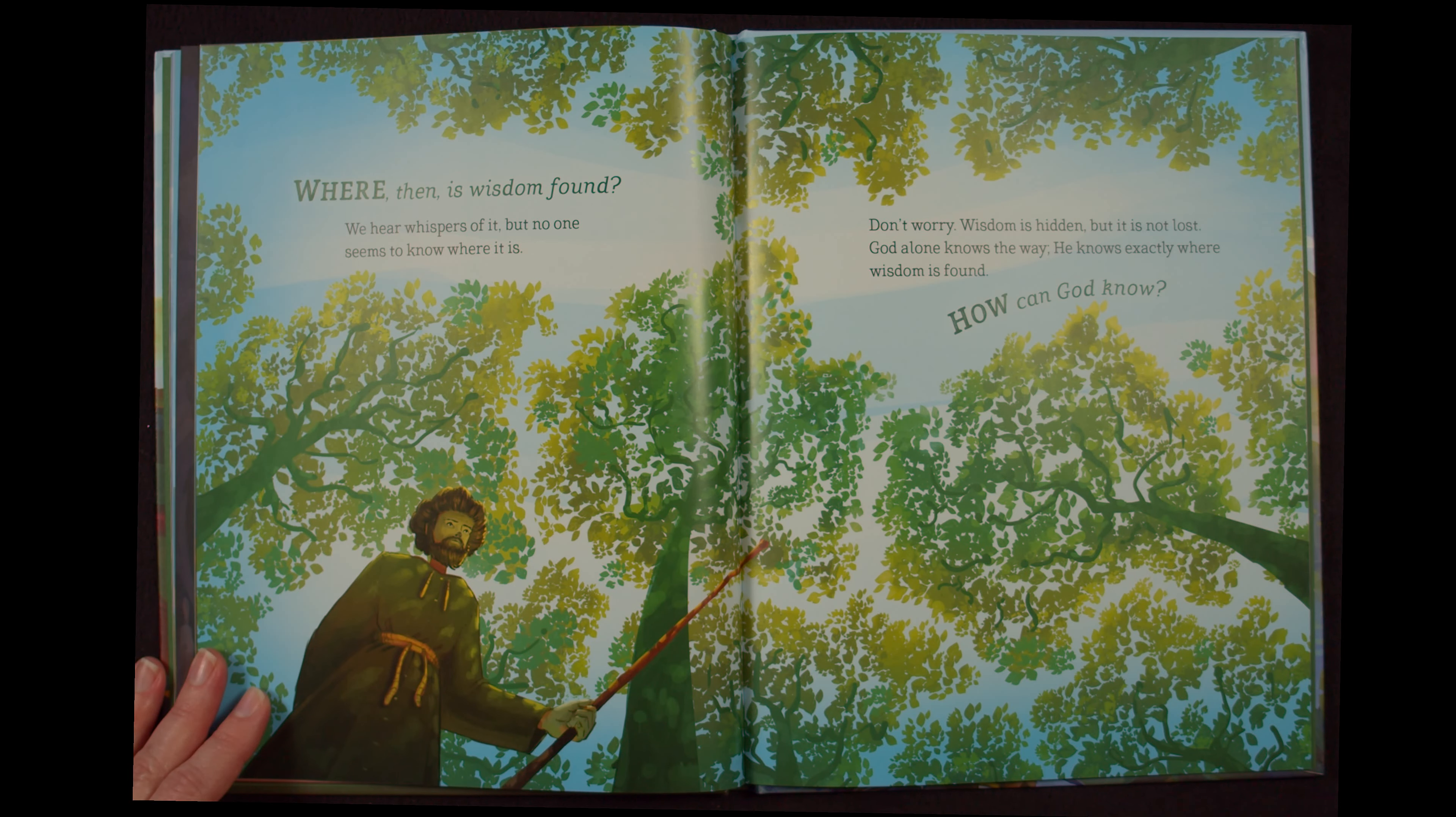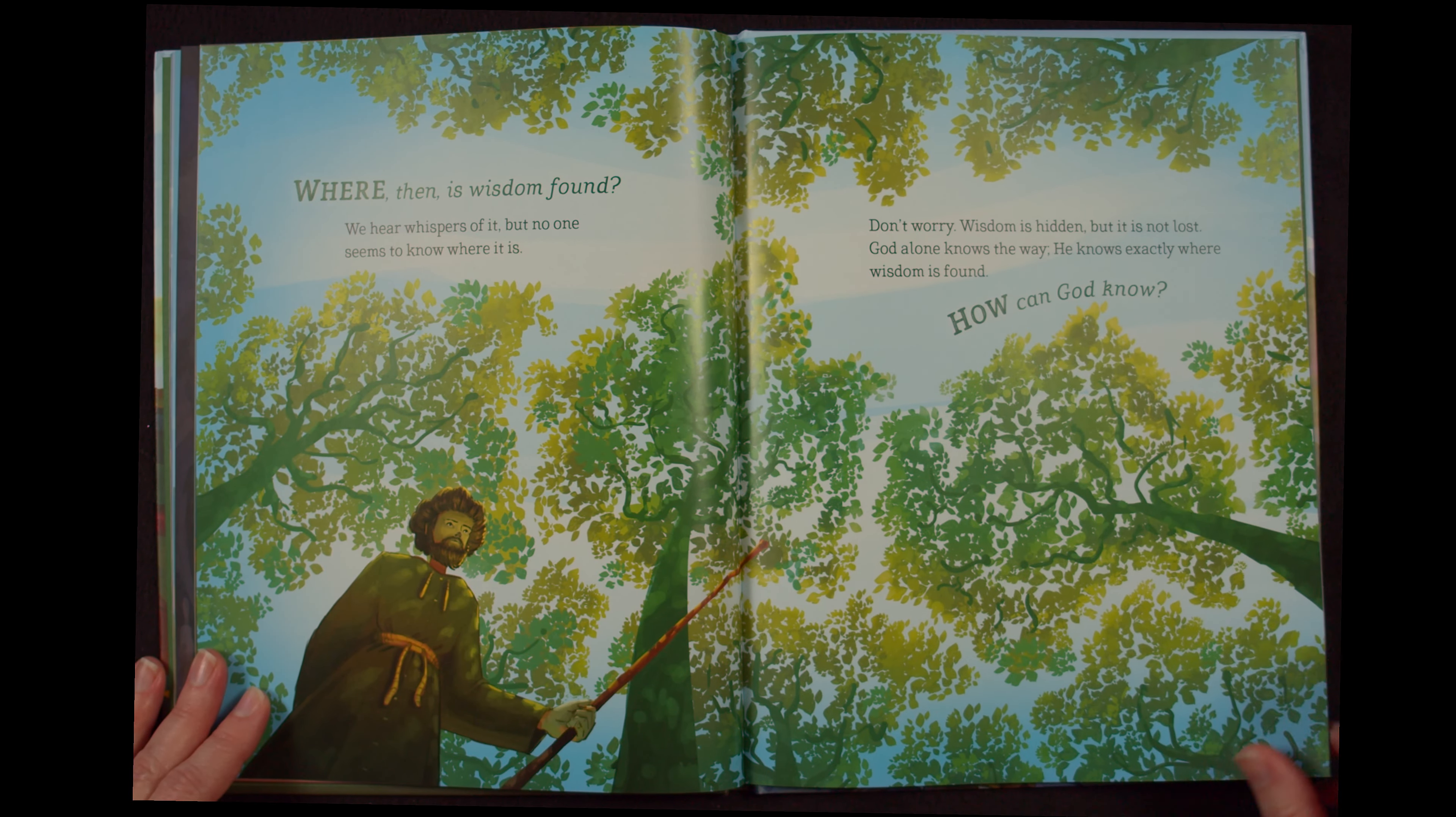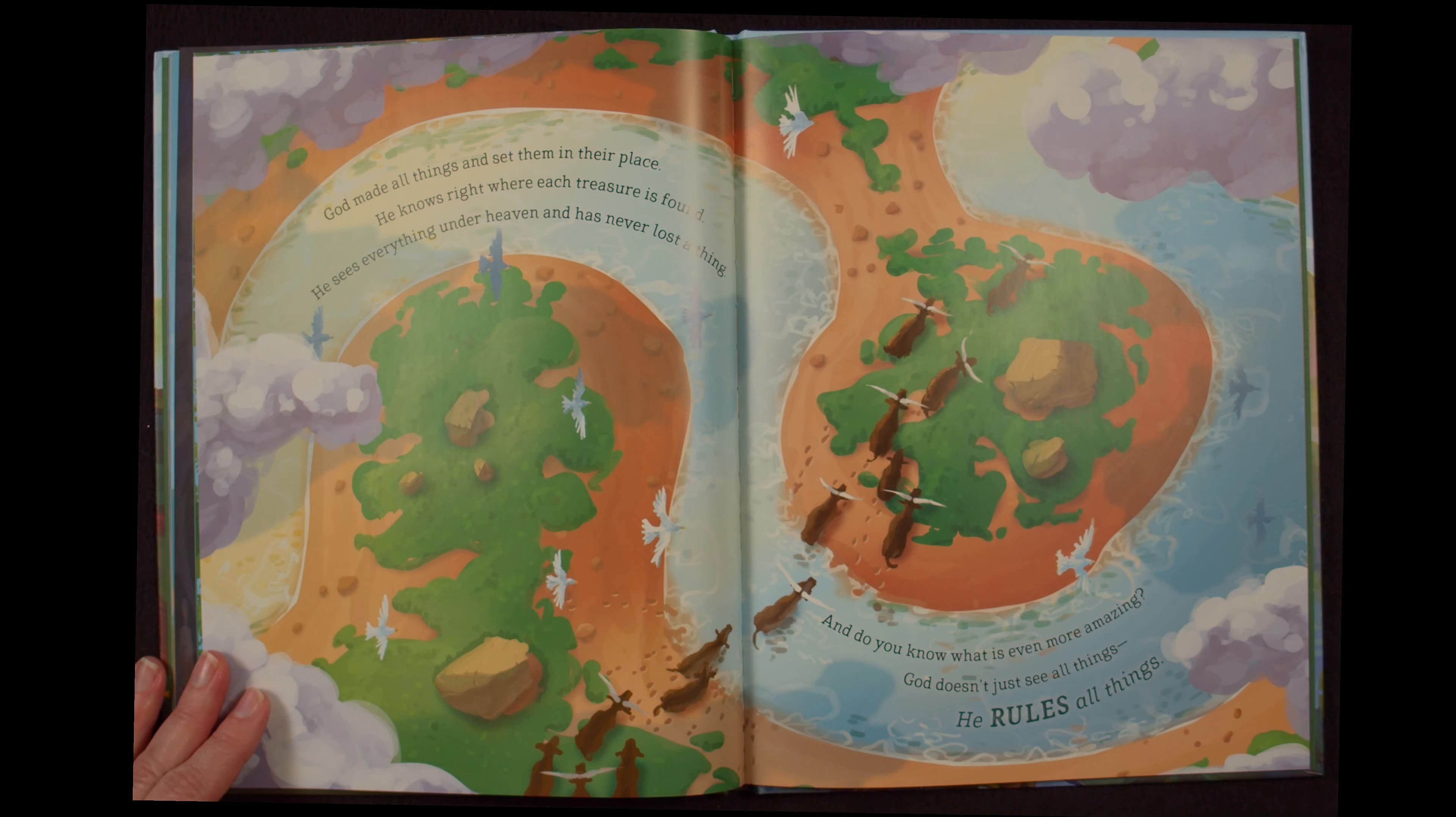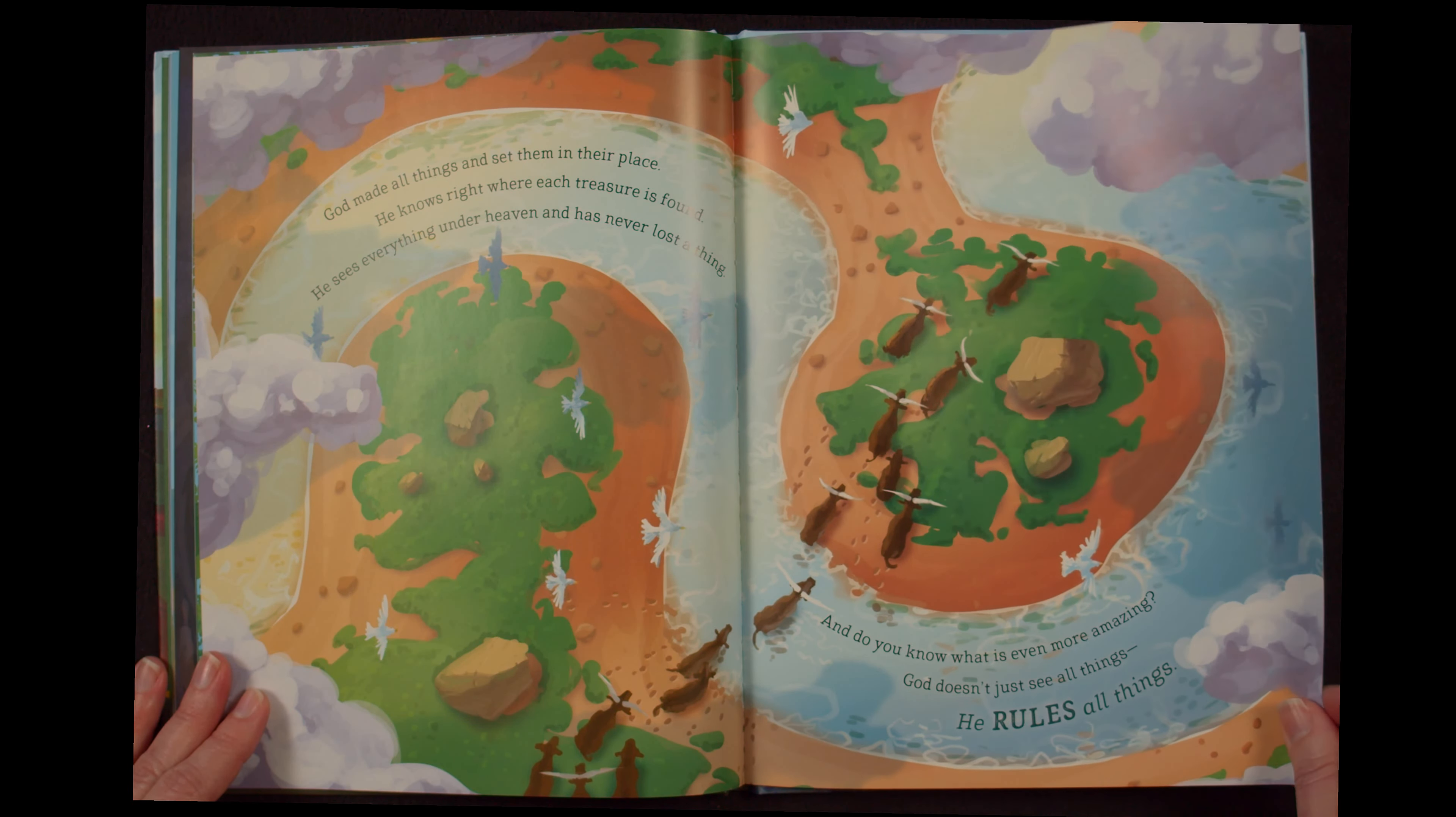God alone knows the way. He knows exactly where wisdom is found. How can God know? God made all things and set them in their place. He knows right where each treasure is found. He sees everything under heaven and has never lost a thing. And do you know what is even more amazing? God doesn't just see all things. He rules all things.